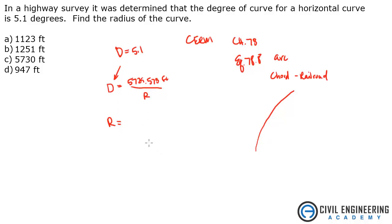We're dealing with highways here, so R equals 5729.578 divided by 5.1 degrees. That gives me 1123.45 feet. The answer is A.